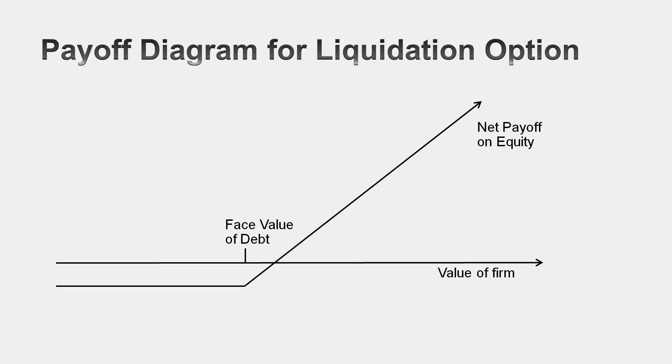Let's draw the payoff diagram on equity in a publicly traded company and the option to liquidate. If you liquidate a firm as the equity investor, you look at the value of the asset in liquidation. If the value of the asset exceeds the face value of the debt, then you get to keep the difference. If the value of the asset is less than the face value of the debt, then nothing — you lose what you originally paid to buy the shares in the company.